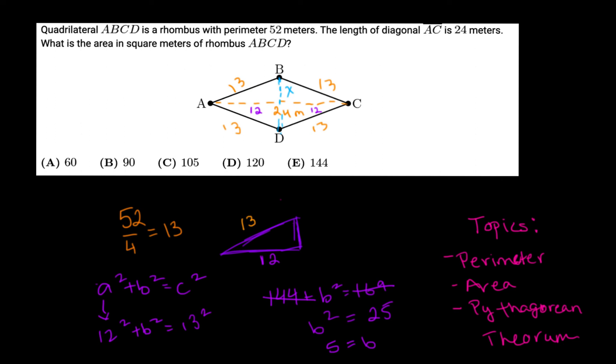Now we have the height, which is 5. The length of the diagonal BD has to be 10 because it's perfectly bisected by AC, so it's 5 on either side of the AC line.